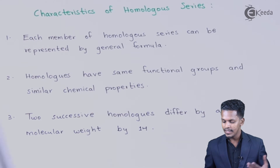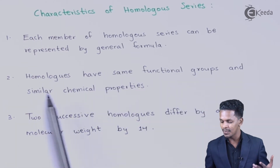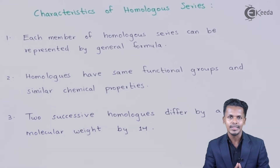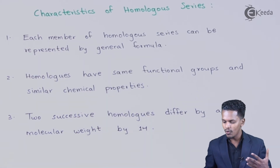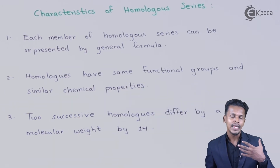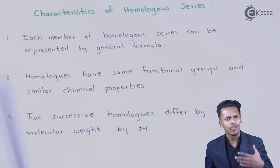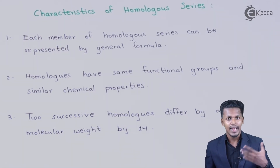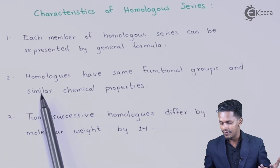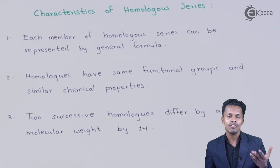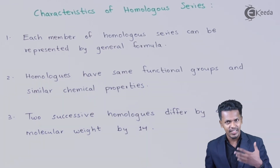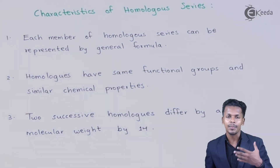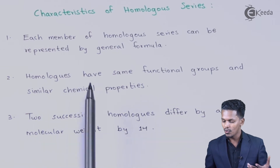The second characteristic is that homologs have the same functional groups and similar chemical properties. As we mentioned, the functional group of alcohols is OH, and every member of that homologous series has the same functional group. This could be OH, ether, ketone, or any other organic group. Consequently, they have similar chemical properties — ethanol has almost similar properties compared to other members of the alcohol series.